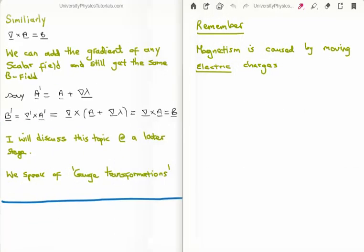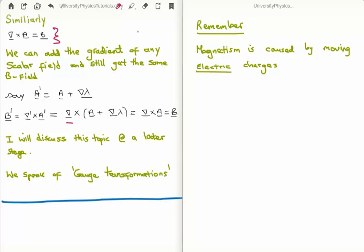To illustrate this for the magnetic vector potential: we know the curl of A equals B. We can add the gradient of any scalar field lambda to A, defining a new potential A-prime equal to A plus the gradient of lambda. Taking the curl of A-prime gives the curl of A plus the curl of the gradient of lambda. But the curl of any gradient is always zero, so we get back the same magnetic field B. This means there is an ambiguity: we can add the gradient of any scalar field to the magnetic vector potential and still recover the same magnetic field. This is the essence of gauge transformations.